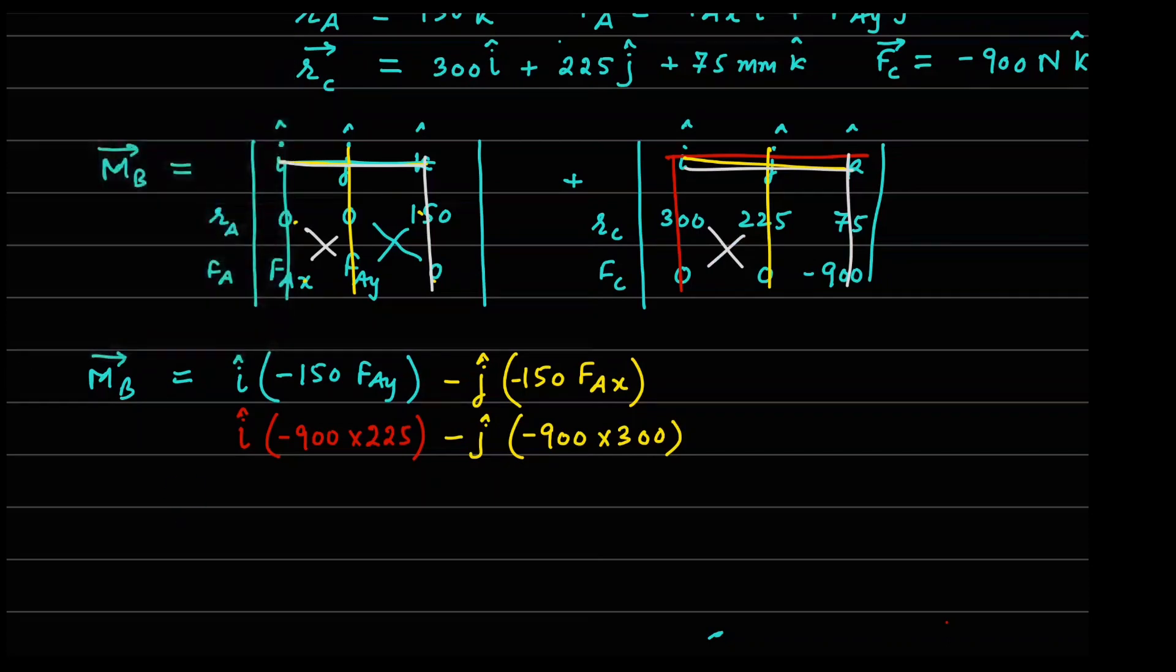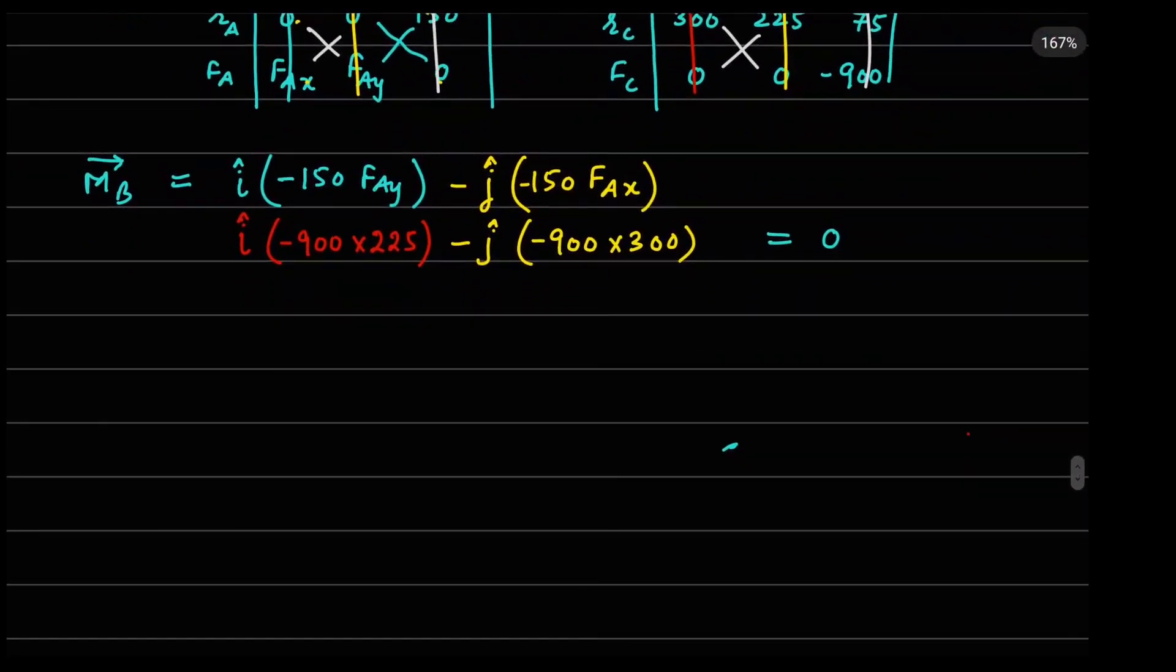Now the total moment for static balance should be equals to 0. So now what we can do is we can look at individual i component and make that i component equals to 0. So on the i component, I can write 150 FAY minus sign and minus 900 into 225 equals to 0. This gives us the value of FAY equals to minus 1350 newtons.